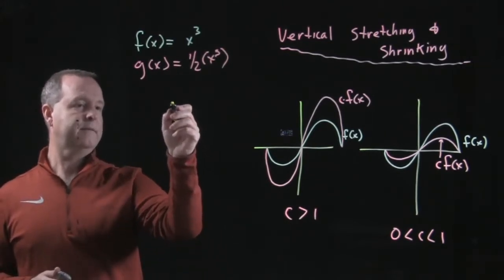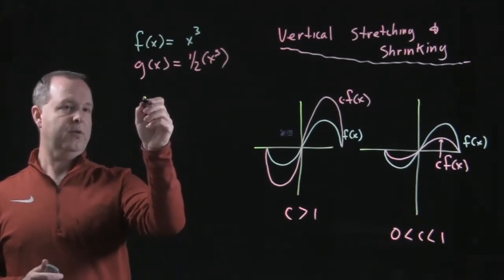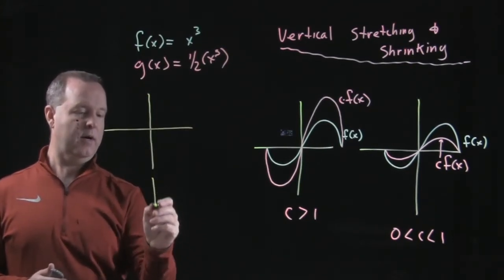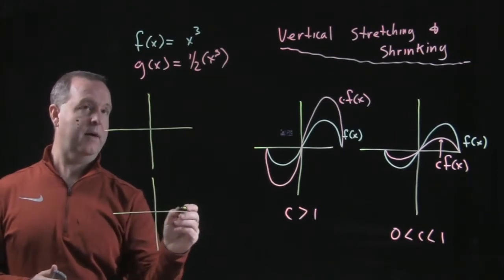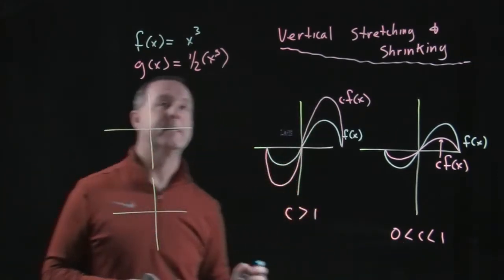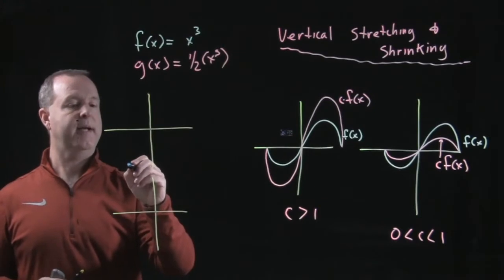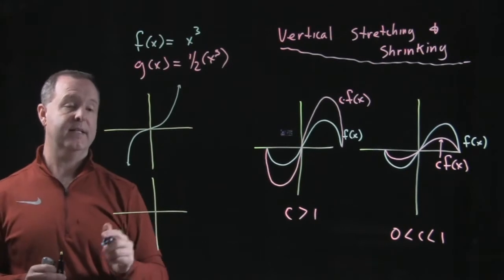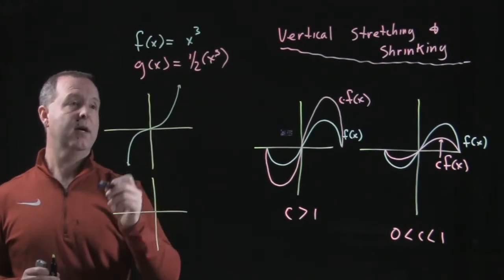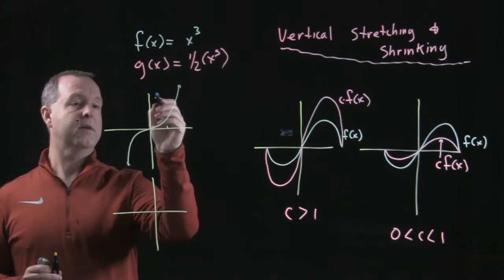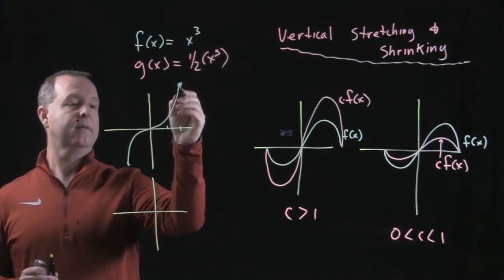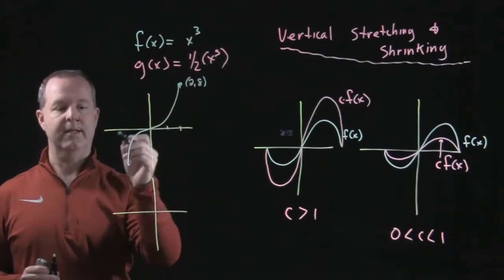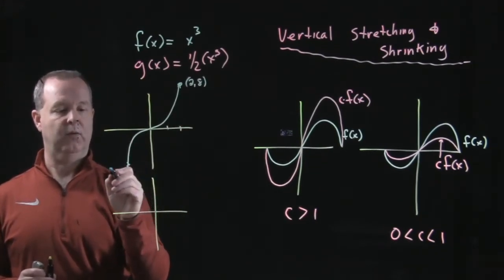Let's draw the first graph, and I'll draw the second one as best I can. So g of x — x cubed — is our basic cubic function. Some points we know on this graph: the point (0, 0), the point (2, 8), and likewise the point (−2, −8) somewhere down here on the graph as well.